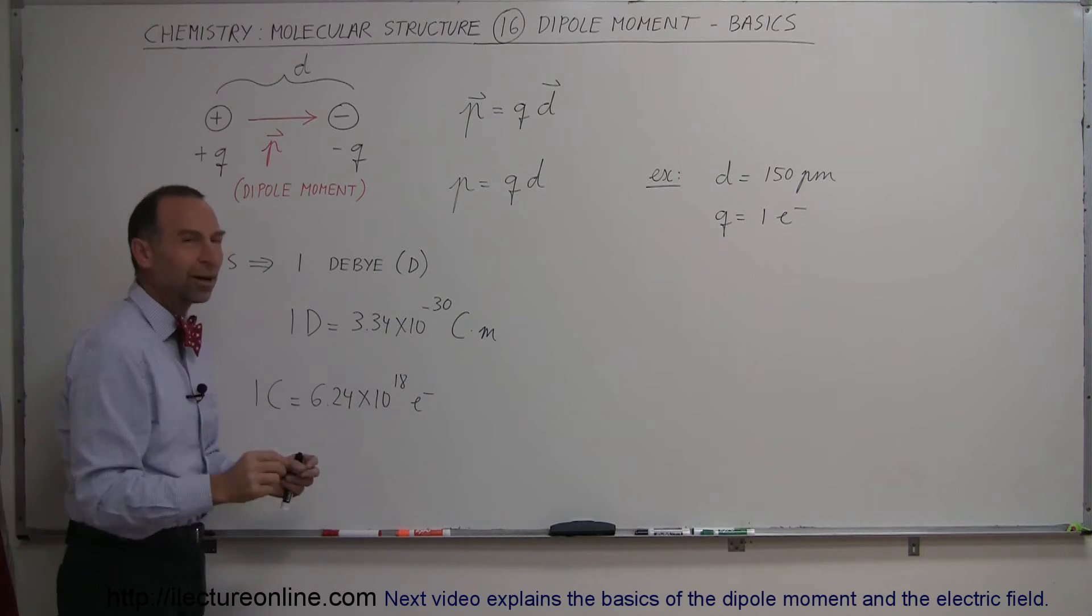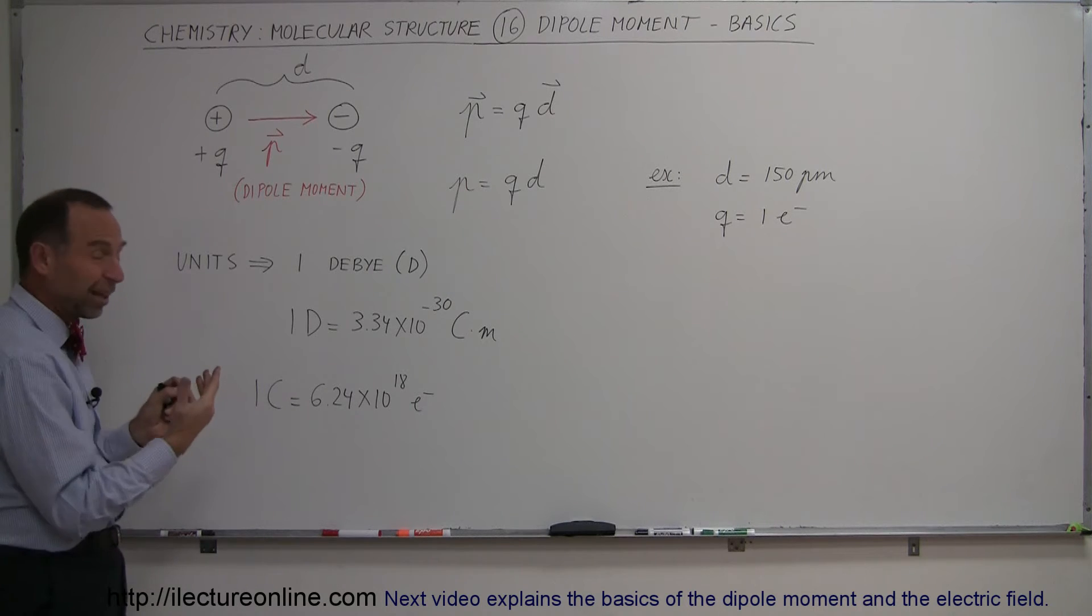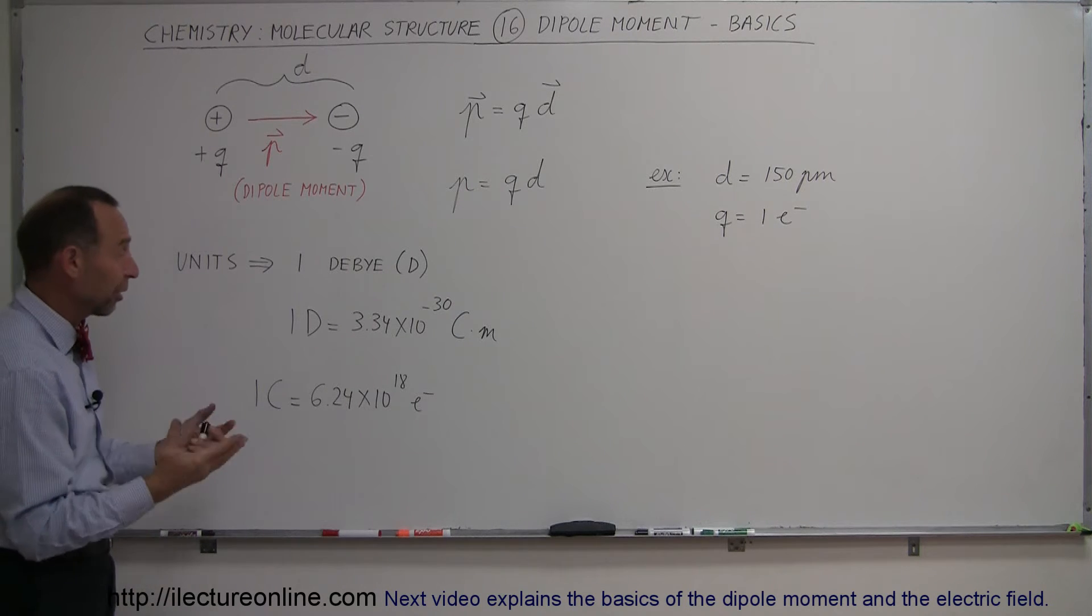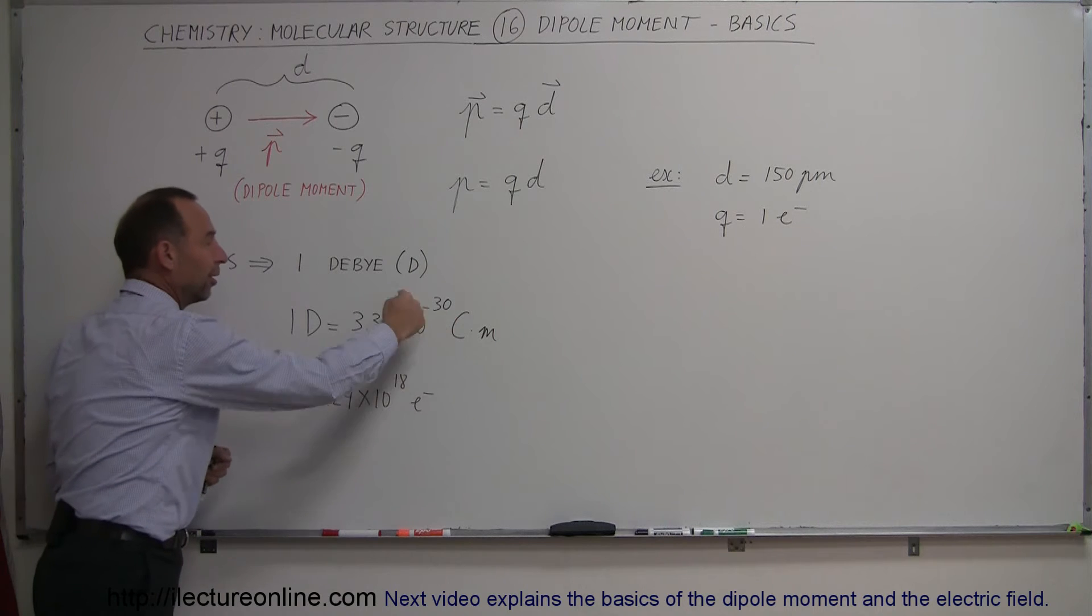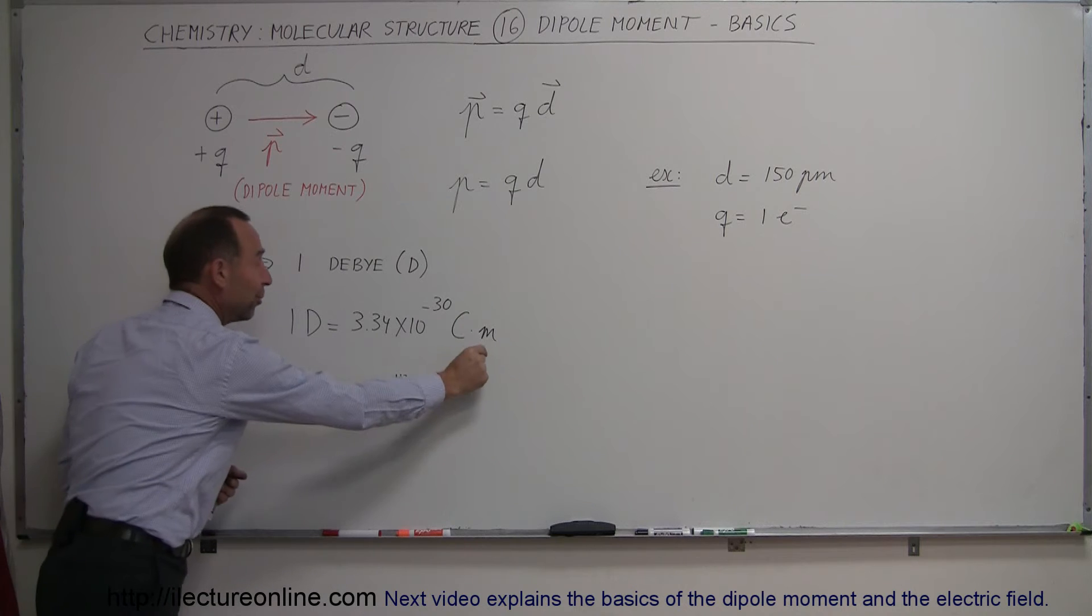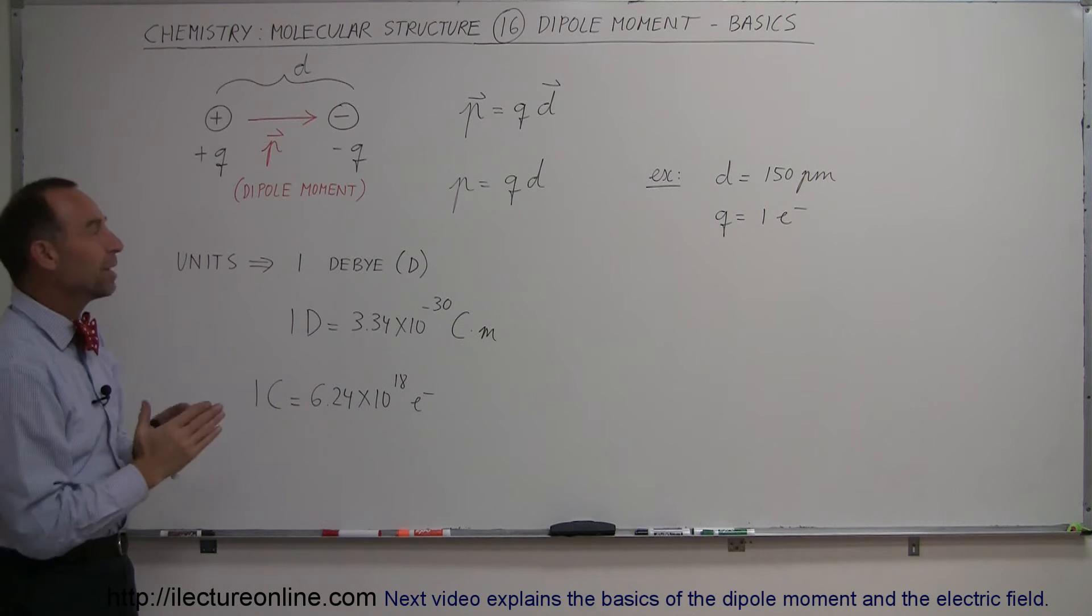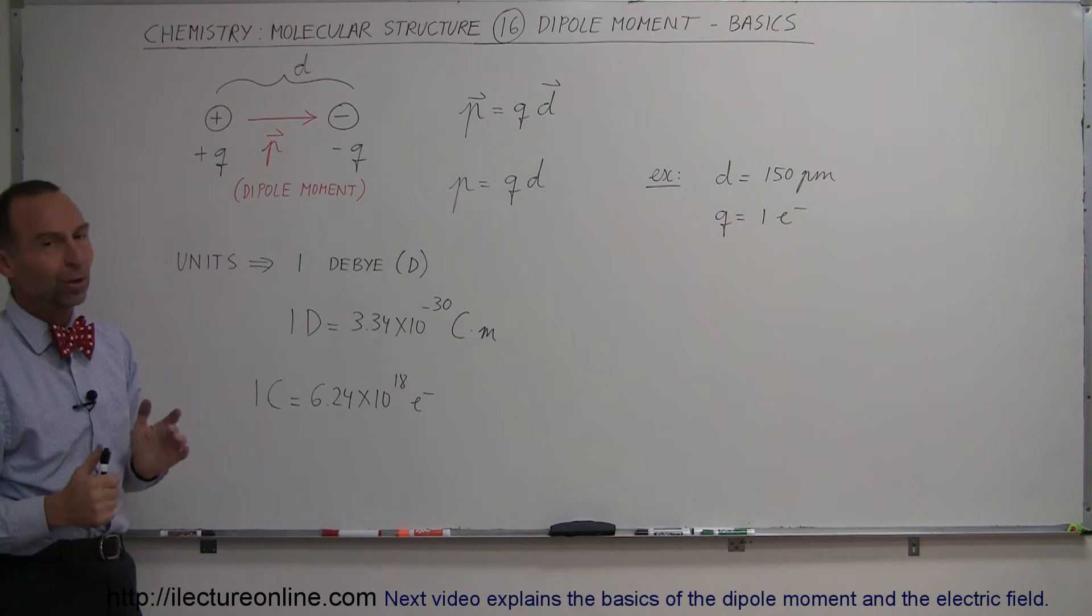When you talk about molecules there's just a very small amount of charge: a single electron, a double electron, a fraction of an electron, whatever it may be. And so therefore the unit of the Debye has to be really small. And also the distance between them is by no means going to be a meter. It's going to be in terms of nanometers and picometers, very small distances between them.